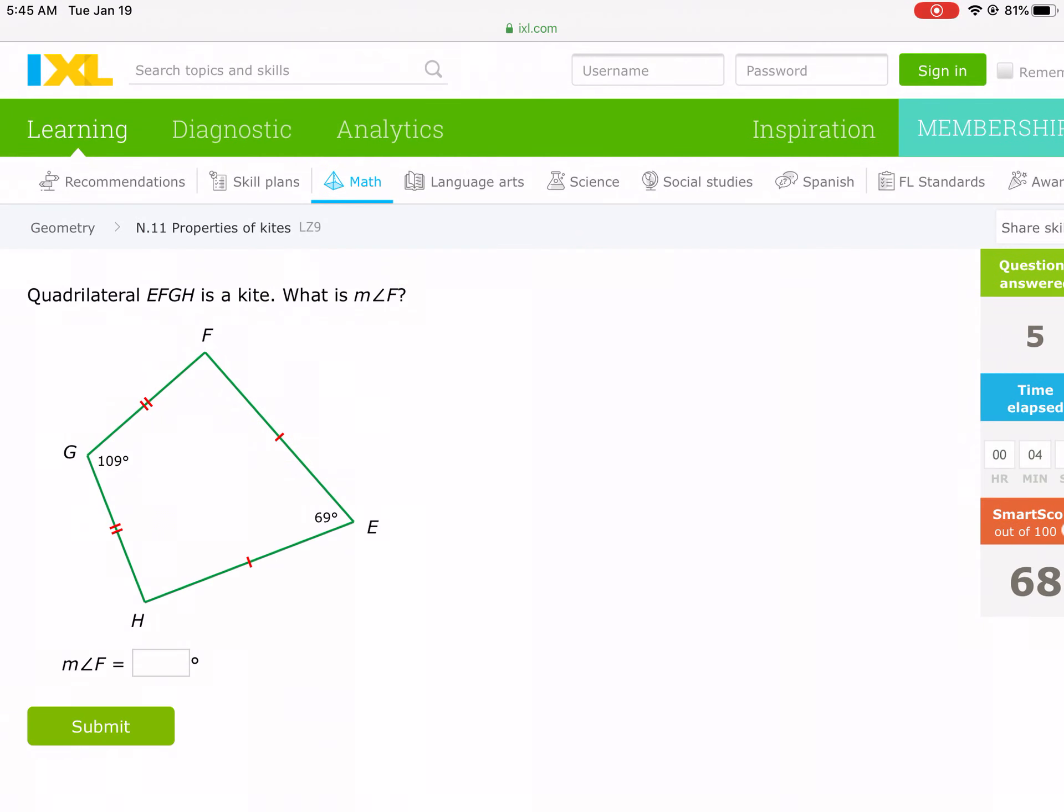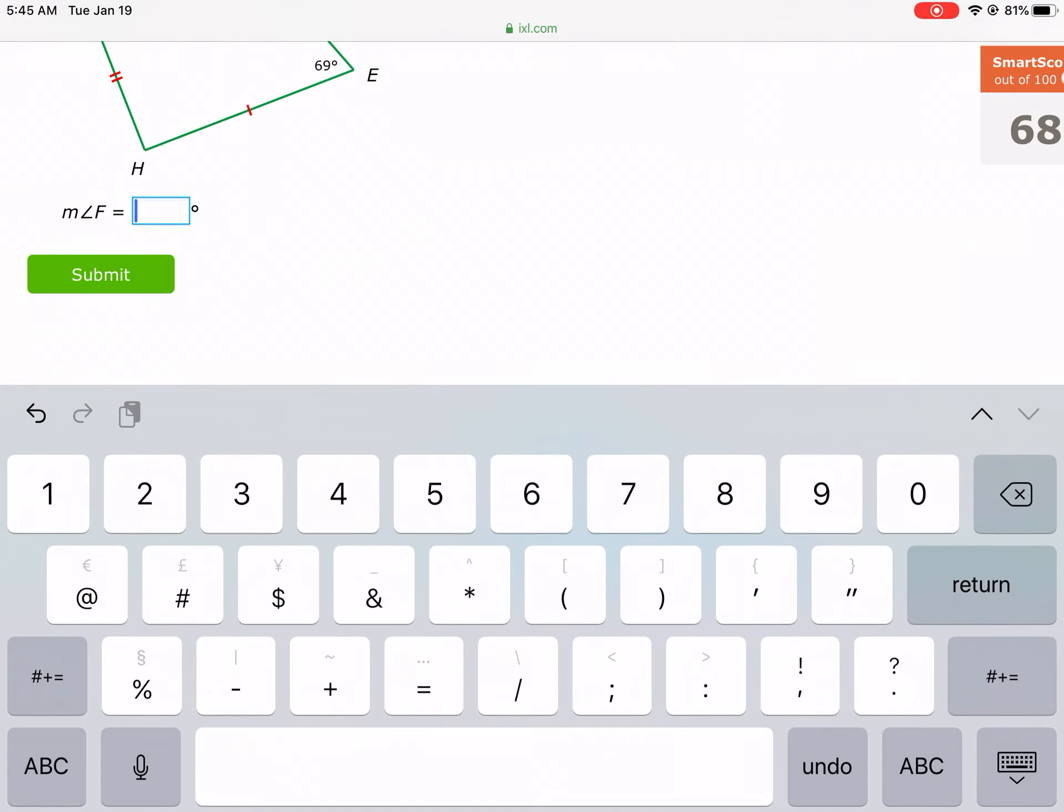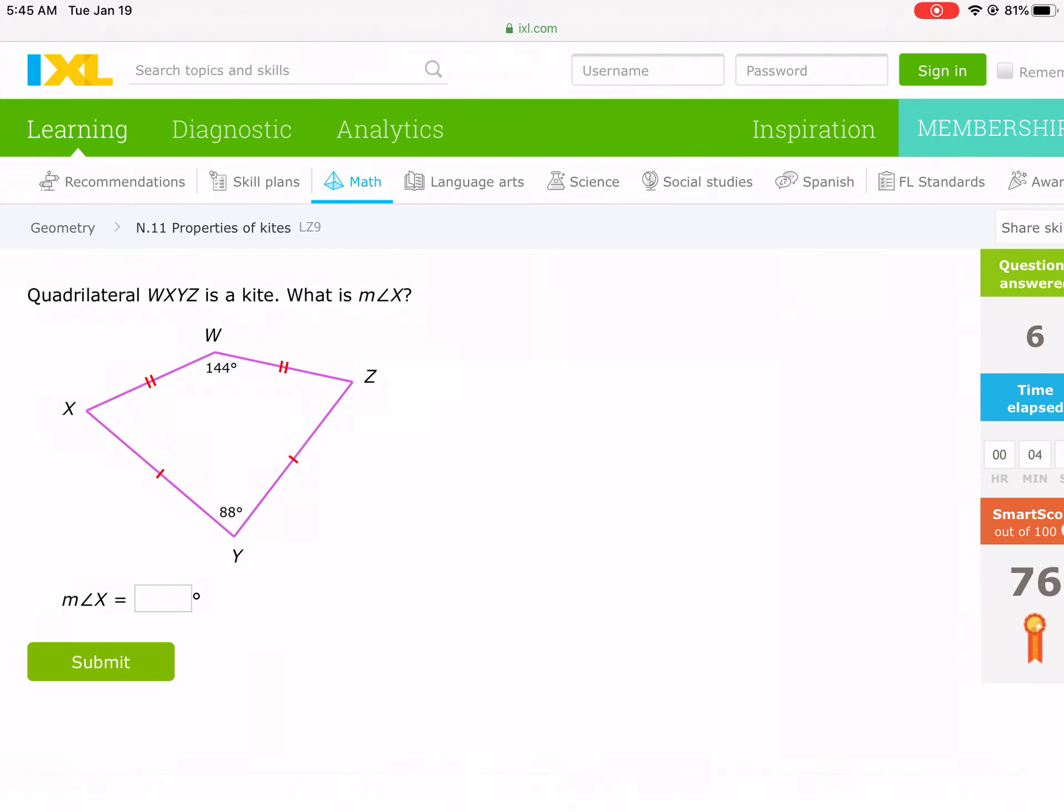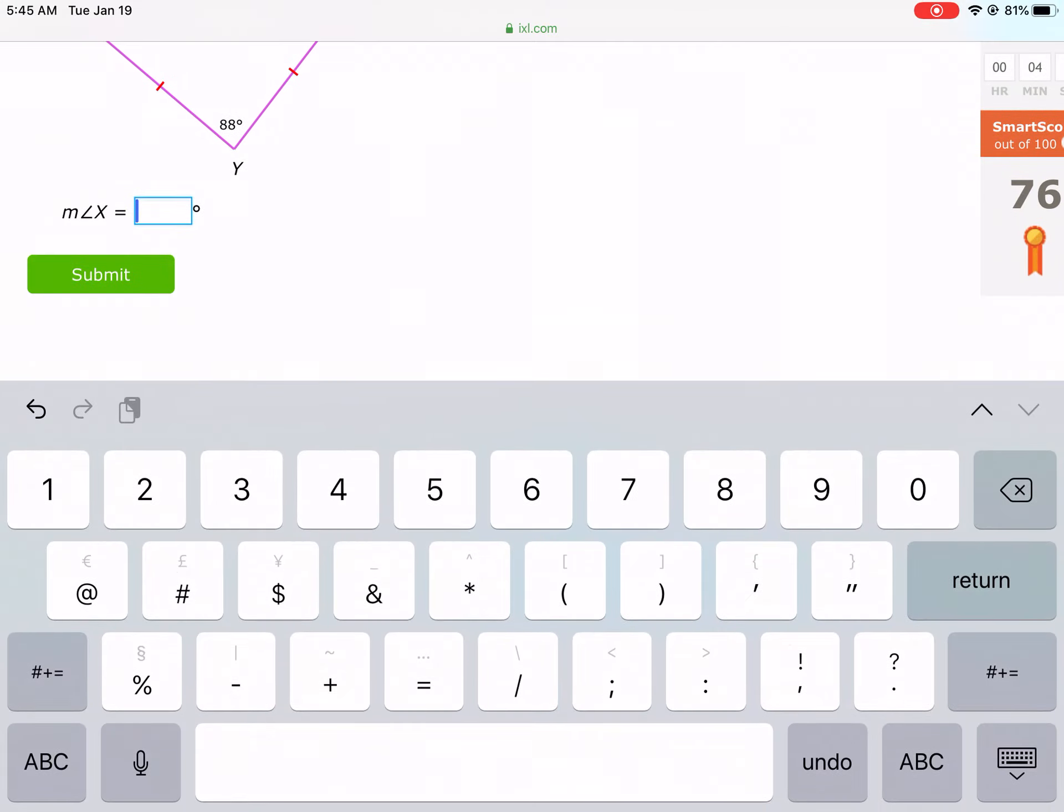You got it. Okay, what are we doing? Another way to do it is 360 minus 109 minus 69 divided by two, and then we should get 91. And we're done with this very soon. We're going to get to the smart score that we want. Same thing, 360 minus 144 minus 88. Guess what? Divided by two, split among two angles, we get 64.